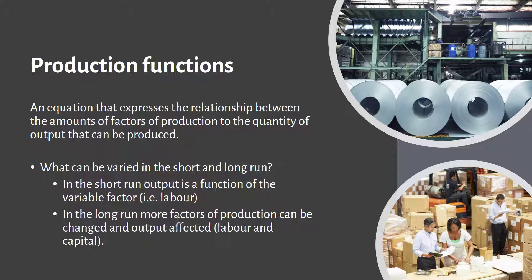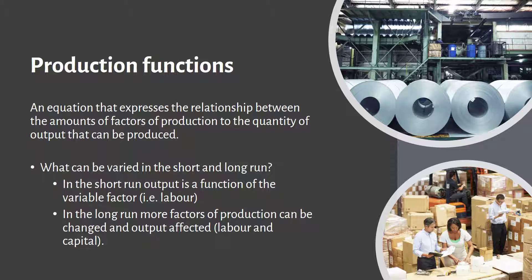When economists talk about production functions, they break them down into short run and long run. In the short run, things are harder to change — imagine a factory full of machines where it's easy to add more people but difficult to double production by simply doubling machines due to space constraints. In the long run, pretty much everything's on the table: you can build another factory or relocate to another country.